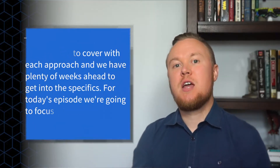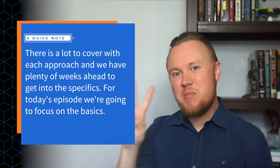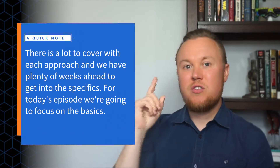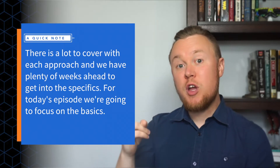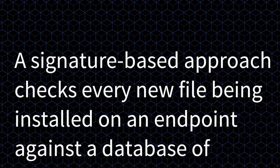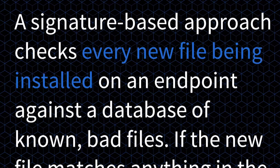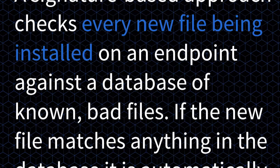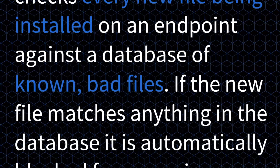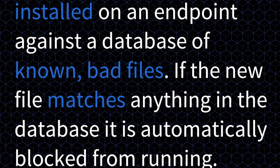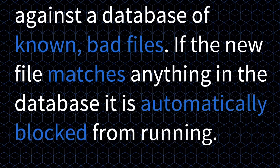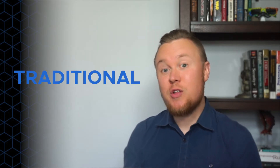To answer our question today, we're really going to look at antivirus in three main buckets: the signature approach, the machine learning approach, and the behavioral approach. Let's start with the signature approach. A signature-based approach checks every new file being installed on an endpoint against a database of known bad files. If the new file matches anything in the database, it is automatically blocked from running. This approach has long been the standard, and it's why it's often referred to as traditional antivirus.